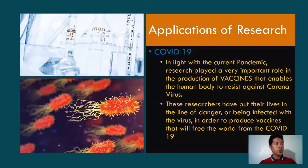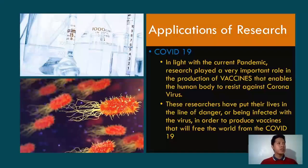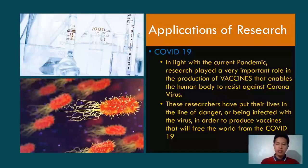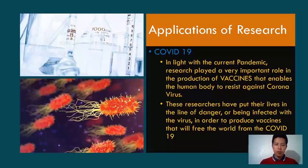In terms of practical applications, in the light of the current pandemic, research played a very important role in the production of vaccines that enable the human body to resist the coronavirus. Researchers put their lives in danger of being infected with the virus in order to produce vaccines that would free the world from the fear of COVID-19. Research made vaccines possible. Not only COVID-19 vaccines, but all vaccines, medicines, and other processes in the medical field are done through extensive research — by experimentation, observation, and clinical trials.